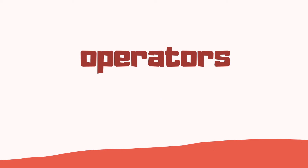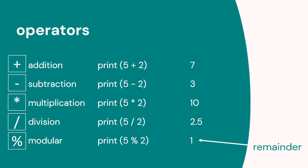Now let's look at operators. These are the simple plus, minus, multiply, divide symbols we use in maths. We also have modulo. With modulo, when you divide by a number there's a remainder — so if we divide five by two, that gives us four with a remainder of one, so the modulo result is one. These are all called arithmetic operators.